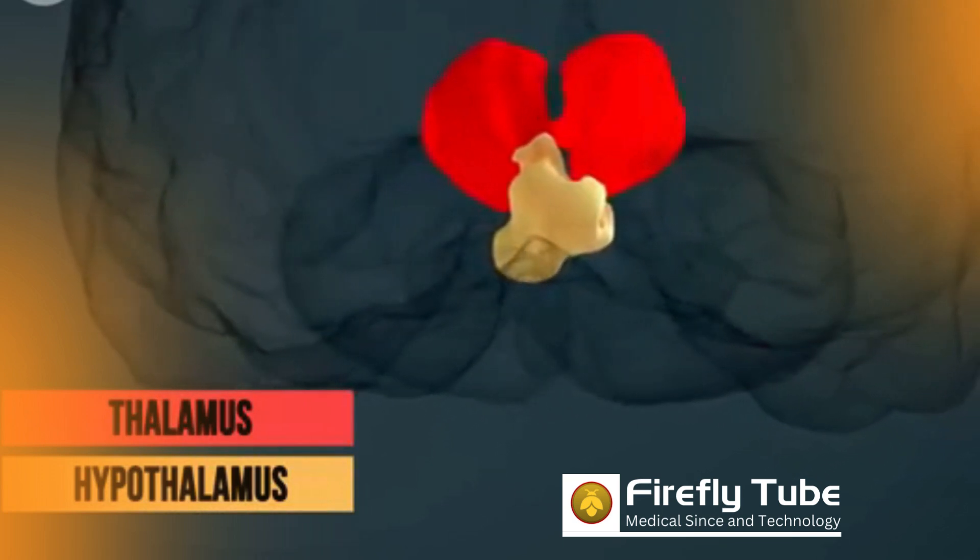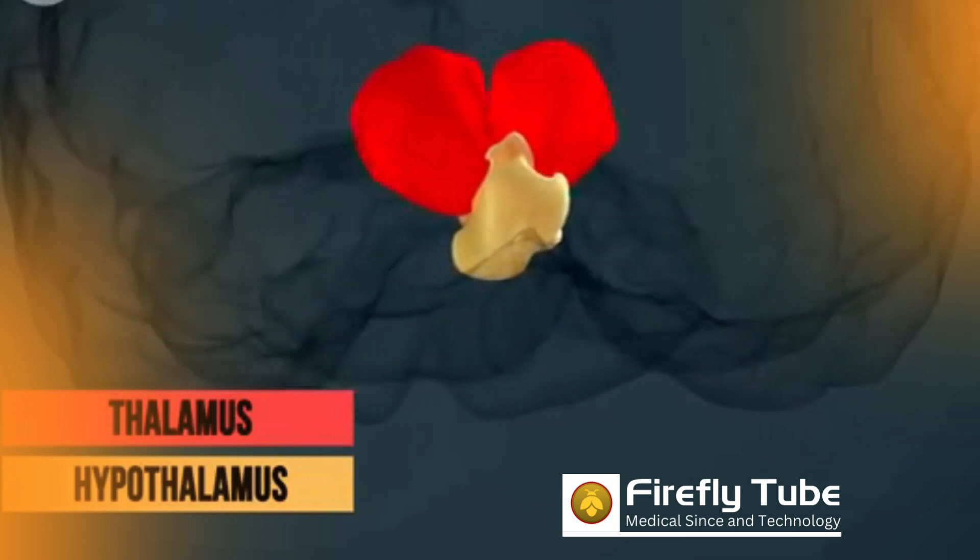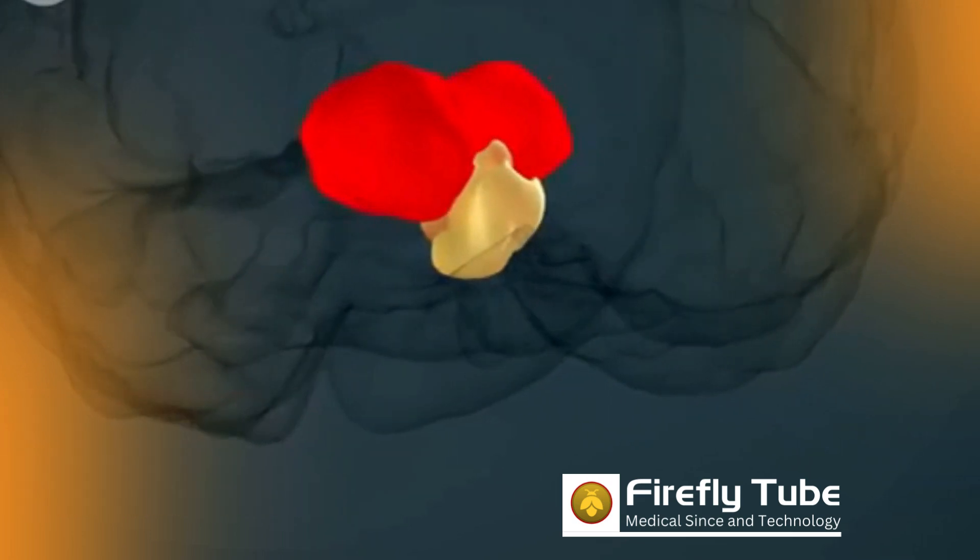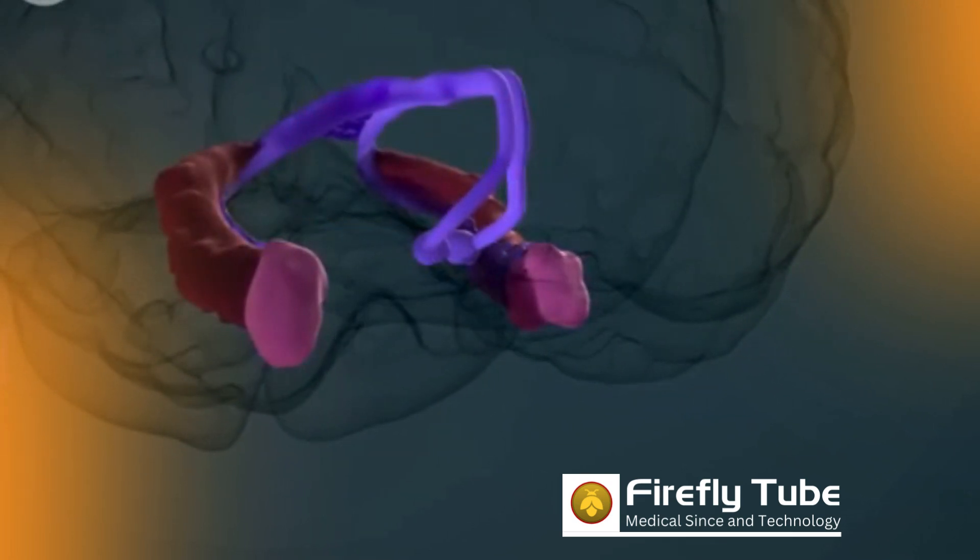The correct setting of temperature and blood pressure is the task of this brain region. The hypothalamus also controls our thirst and hunger.